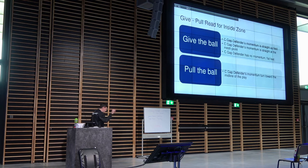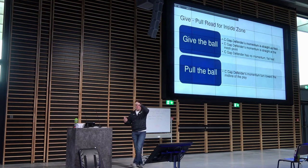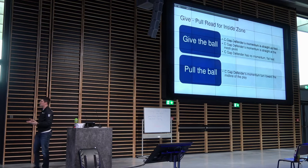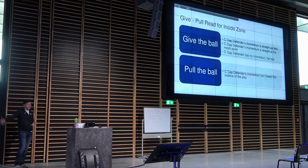When to pull, when to give — if you're reading the C-gap defender, the edge defender on a normal zone read: you want to give it when the defender's momentum is straight up field. Give, every time. Now that doesn't happen very often at a high level of football — if a defensive end is unblocked he's not just going to run straight up field. But you'd be surprised.